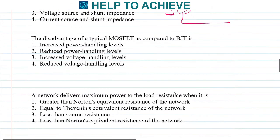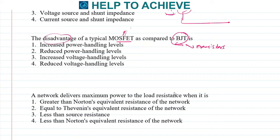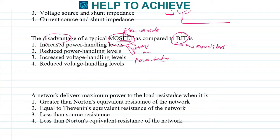Next: what is the disadvantage of a typical MOSFET compared to a BJT? BJTs are typical normal transistors, while MOSFETs use semiconductor oxide layers. MOSFETs generally operate at higher voltage levels but with lower current levels, meaning their power handling capacity is very limited. The correct answer is reduced power handling levels.